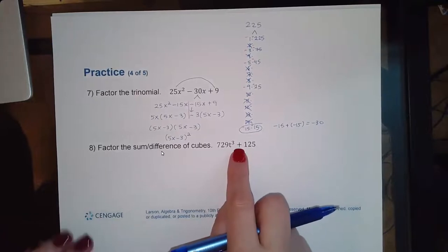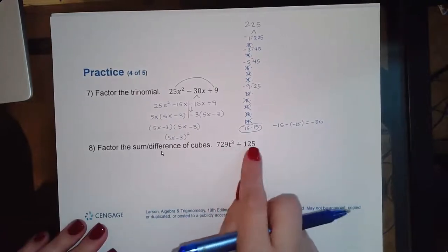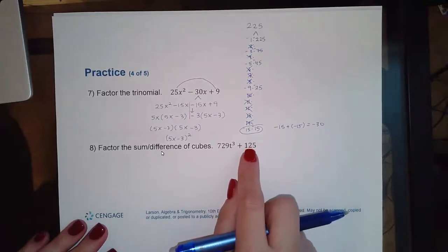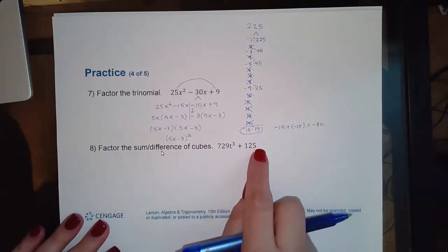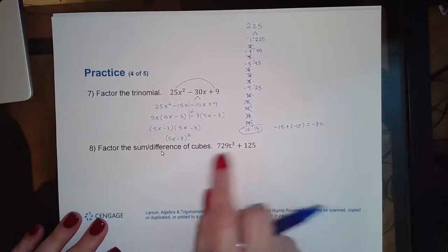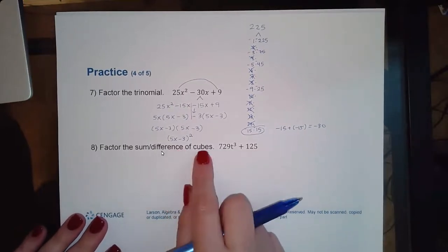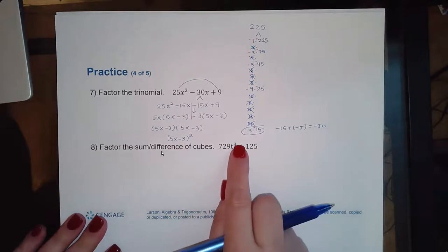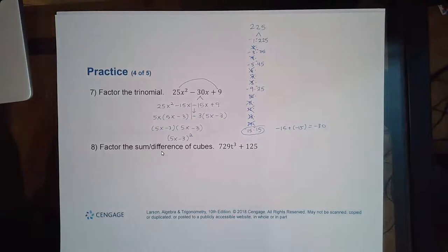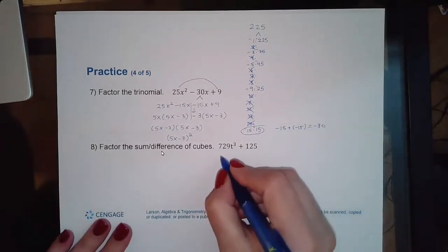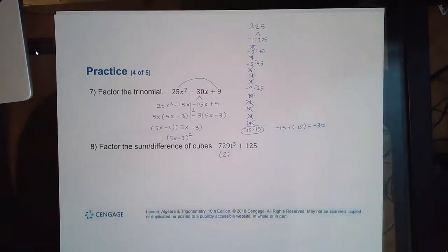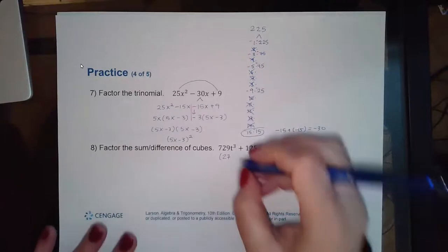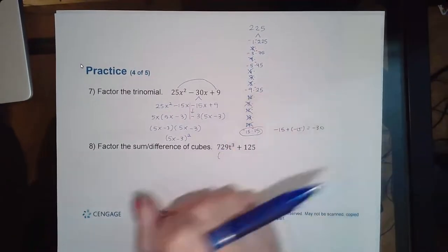Now we have a two-term expression. I'll try to factor out a GCF, but there isn't one — the only factors here are fives, and five doesn't divide the other term, and there are no common variables. So I'm going straight into factoring as a difference of two cubes, since the power is three. The cube root of 729 — I need to use the calculator for that.